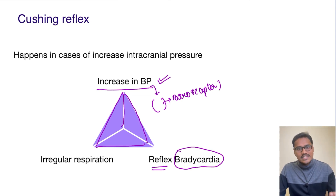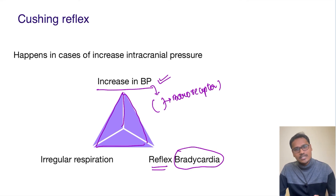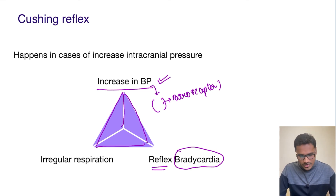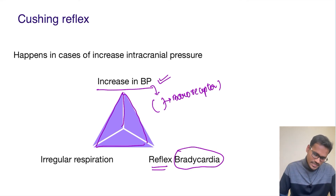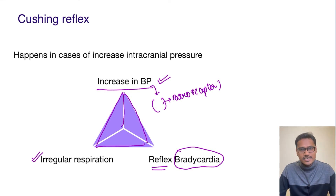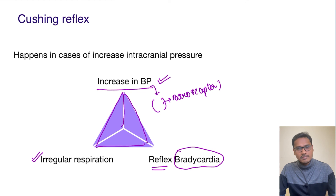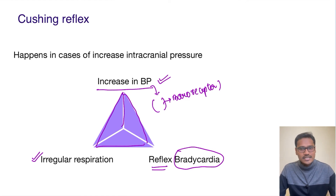This raised ICT not only affects the blood pressure centers, it also affects the respiratory centers, causing irregular respiration. So the triad is: increase in BP, reflex bradycardia, and irregular respiration.